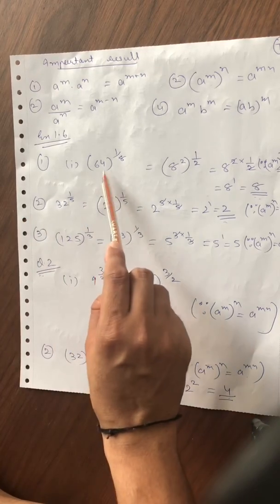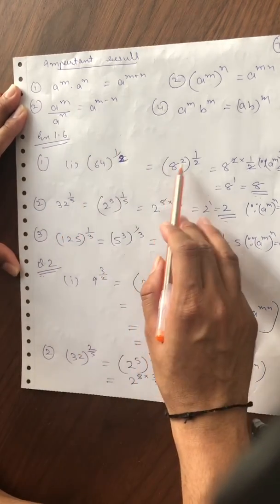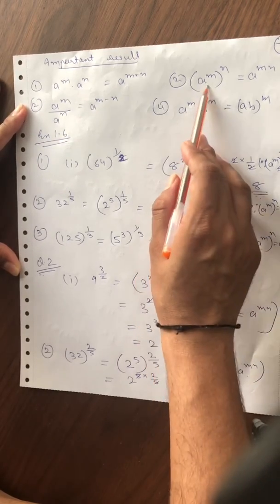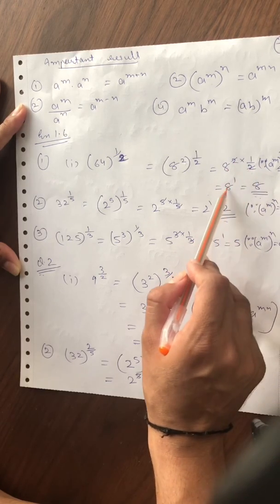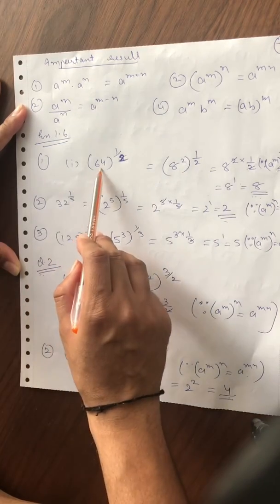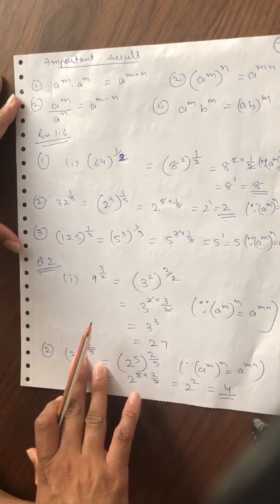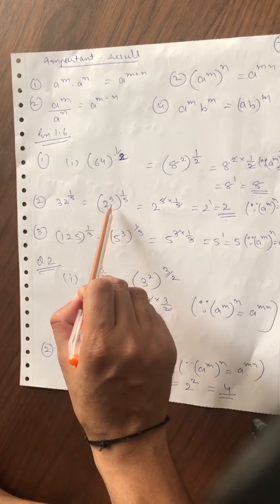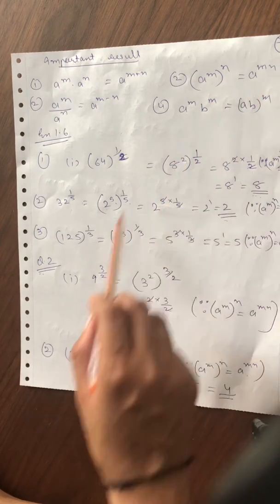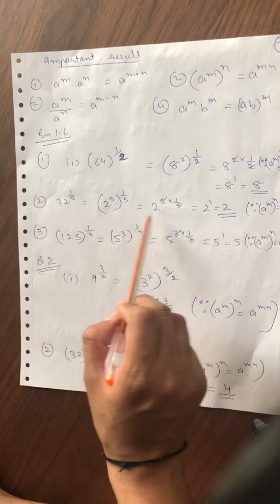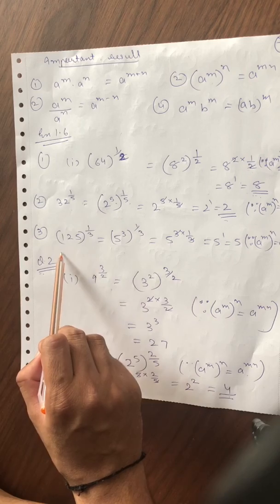First sum: 64^(1/2)। 64 को 8² लिख सकते हैं, तो (8²)^(1/2) = 8^(2×1/2) = 8^1 = 8। Second sum: 32^(1/5)। 32 को 2^5 लिख सकते हैं, तो (2^5)^(1/5) = 2^(5×1/5) = 2^1 = 2। Third sum: 125^(1/3)। 125 को 5³ लिख सकते हैं, तो (5³)^(1/3) = 5^1 = 5।